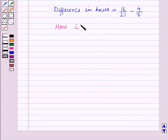Now, the least common denominator is 21.